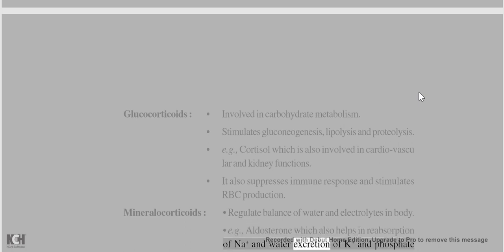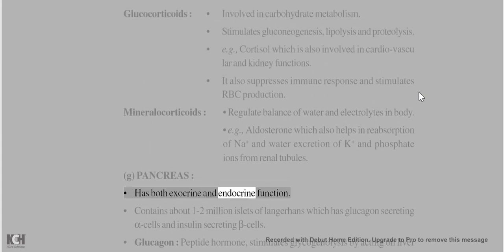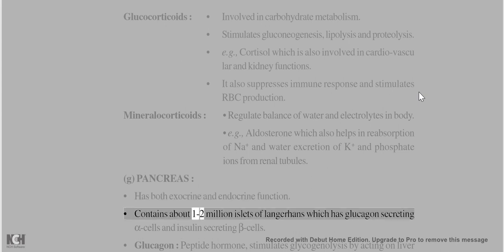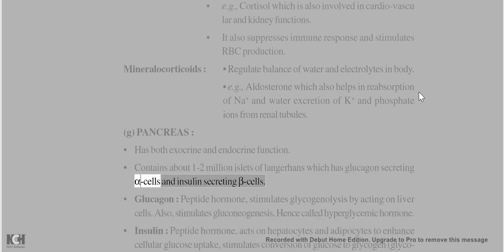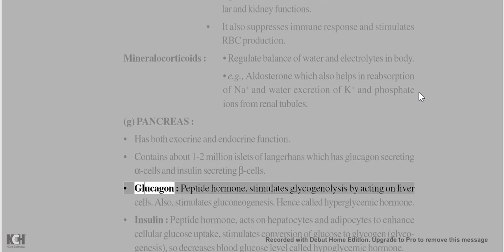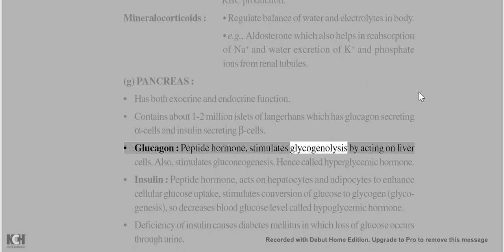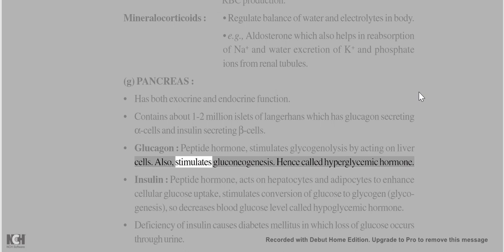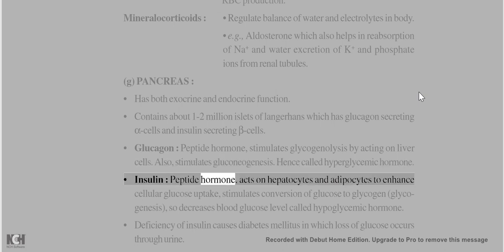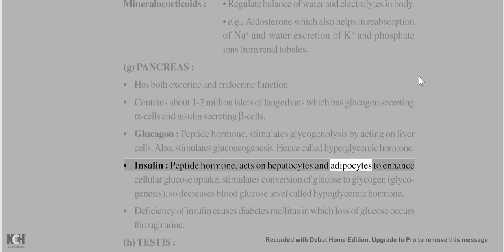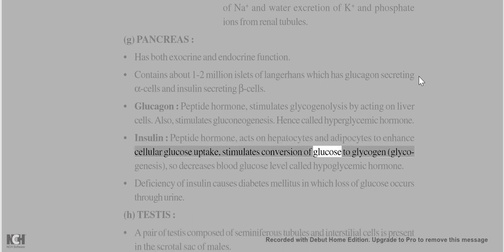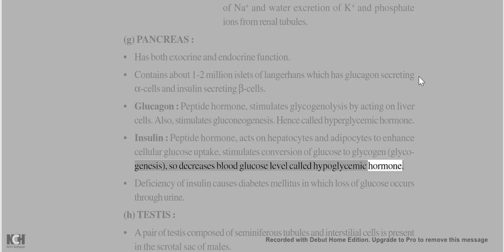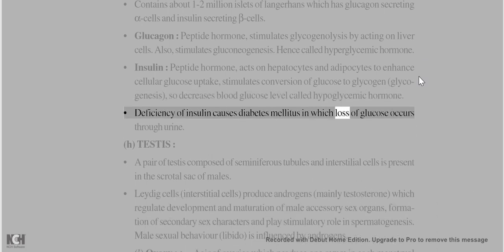Aldosterone helps in reabsorption of Na⁺ and water, and excretion of K⁺ and phosphate ions from renal tubules. Pancreas has both exocrine and endocrine functions. It contains about 1–2 million islets of Langerhans, with glucagon-secreting alpha cells and insulin-secreting beta cells. Glucagon (peptide hormone) stimulates glycogenolysis in liver cells and gluconeogenesis – it is called the hyperglycemic hormone. Insulin (peptide hormone) acts on hepatocytes and adipocytes to enhance cellular glucose uptake and stimulates glycogenesis, decreasing blood glucose – it is the hypoglycemic hormone. Deficiency of insulin causes diabetes mellitus.